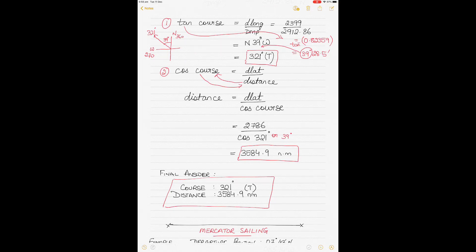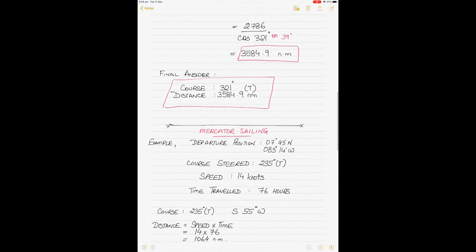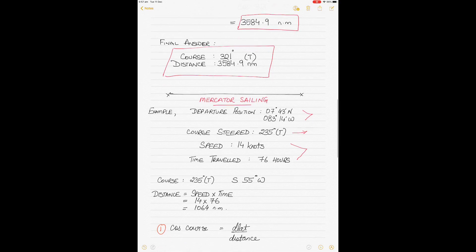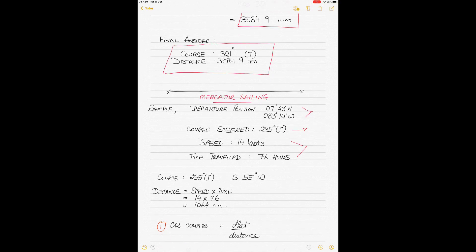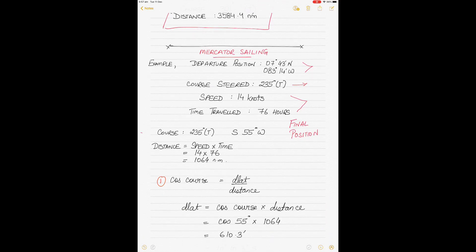Now let's do another type of Mercator sailing question. This type gives us a departure position, a course steered, and information to calculate distance — and we must find the final arrival position after steering that course and distance from the departure.